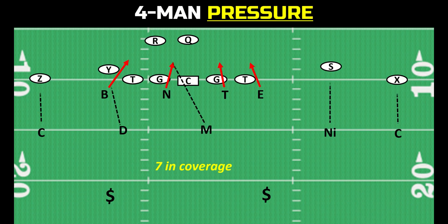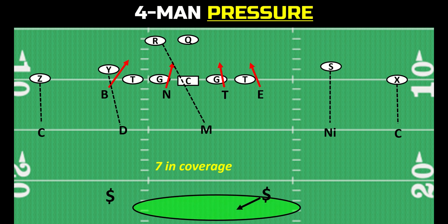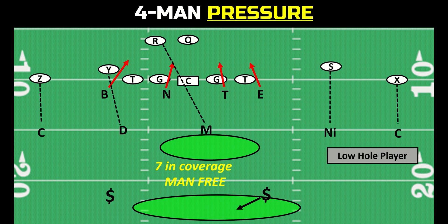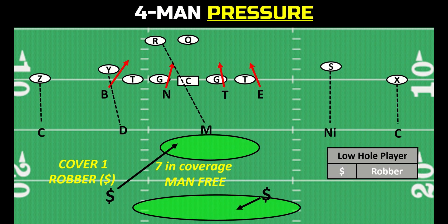When there's a four-man pressure with man defense behind it, you have a post safety. This is called man free because the other safety — or sometimes a linebacker — is playing the low hole. You have a post safety who's not letting anything get behind him, and then a low hole player. That low hole player is the free defender in this coverage, hence man free. When the low hole player is a safety, he is called a robber. This coverage is called cover one robber — also referred to as lurk, cross, or hole.